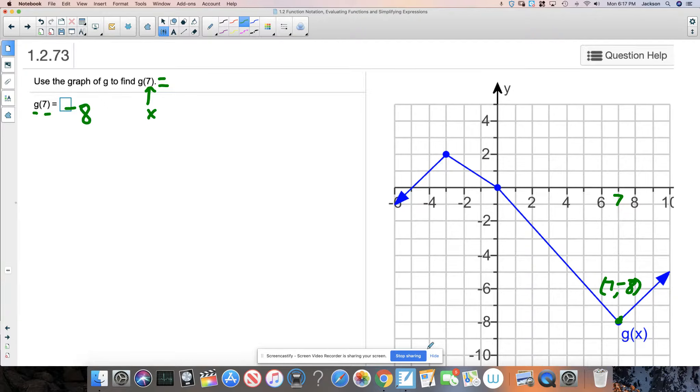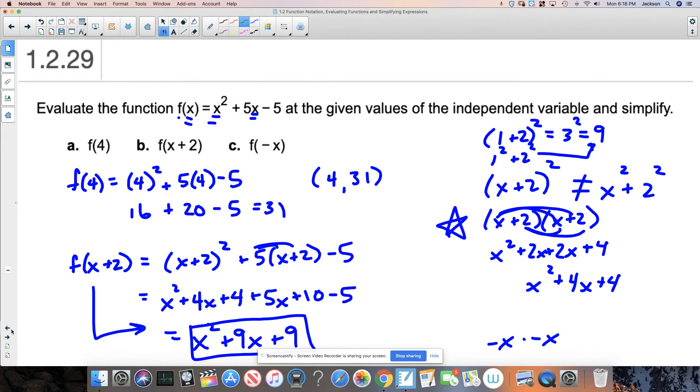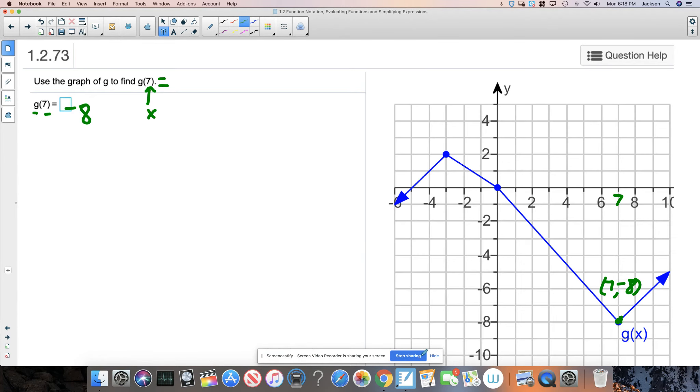In this case, we get negative eight. This is just a different way of evaluating a function. We're giving the function a value when we have an input value here. So we're evaluating the function graphically, instead of algebraically, like we were doing with these problems. Something a little different for you.